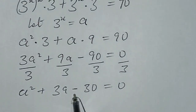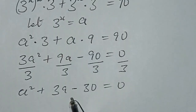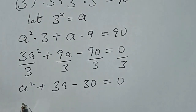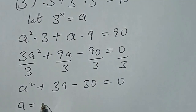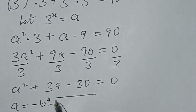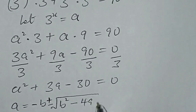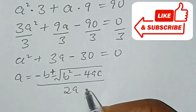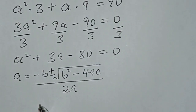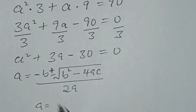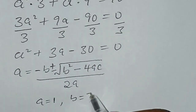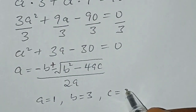This appears to be a quadratic equation, so we are going to use the quadratic formula to solve for A. From our quadratic formula we have A equal to minus b plus or minus square root of b squared minus 4ac, all over 2a. So here a equals 1, b equals 3, and c equals minus 30.